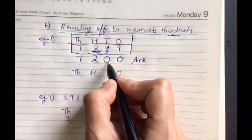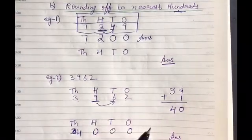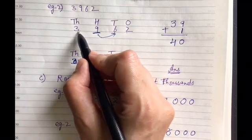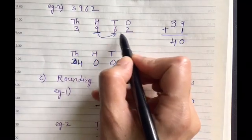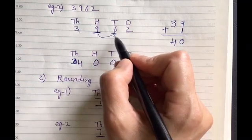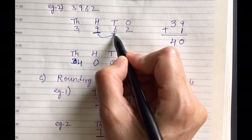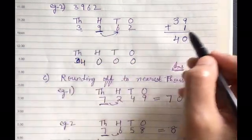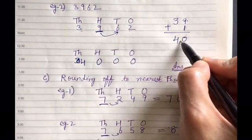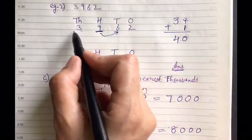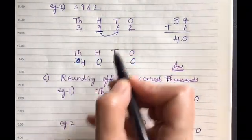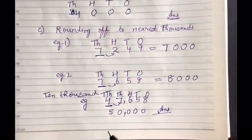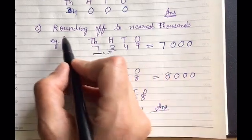Another example where the right digit is greater than 5: take 3962. Underline the hundreds place and check the digit at the tens place — it is 6. So we add 1 to the hundreds digit: 9 plus 1 gives us 10, making 39 become 40. The tens and ones digits both become 0, so the answer is 4000. This completes rounding off to the nearest hundred.